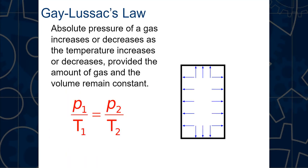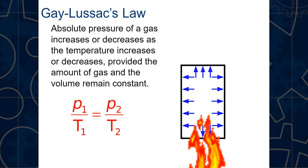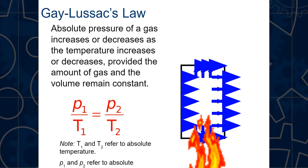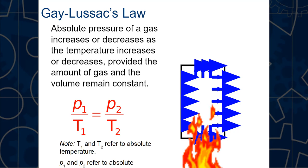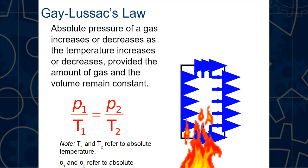Gay-Lussac's Law: the absolute pressure of a gas increases or decreases as temperature increases or decreases, provided the amount of gas and the volume remain constant. The formula is P₁/T₁ = P₂/T₂. Both temperatures must be in absolute temperature (Rankine), and both pressures must be in absolute pressure. The pressure conversion is the tricky part.